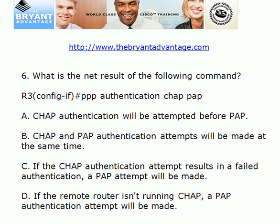What is the net result of this command? When you list multiple PPP authentication methods, the methods are tried in the order in which they're listed from left to right. If the remote router isn't running that particular method, the next method is tried. But if the remote router is running that first method and authentication fails, the second method is not used. So here we're looking at CHAP being attempted before PAP, and A is correct. B is incorrect because they're not going to be attempted at the same time. C is incorrect because if the CHAP authentication attempt fails, a PAP attempt is made. D is true if the remote router is not running CHAP — a PAP authentication attempt will be made.